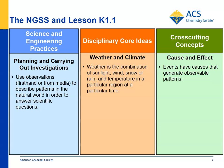For disciplinary core ideas, weather is the combination of sunlight, wind, snow, or rain, and temperature in a particular region at a particular time — here we focused in on rain and what makes it rain. For cross-cutting concepts, cause and effect: events have causes that generate observable patterns. Students make models and observations to understand that rain comes from clouds, that water molecules create tiny drops of water, those tiny drops come together to make bigger drops, and those bigger drops fall as rain.